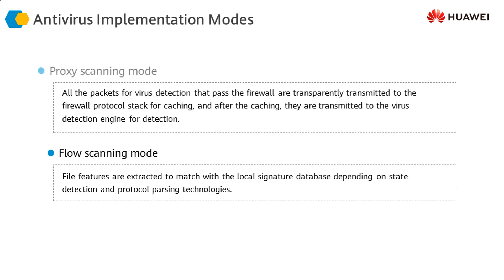This antivirus mechanism can be implemented in two modes: proxy scanning mode or flow scanning mode. In proxy scanning mode, the file is cached before antivirus detection and cleaning is performed. In flow scanning mode, caching is not done — samples are taken from the files to detect whether they contain a virus. Proxy scanning mode is more effective but puts a lot of load on the device, whereas flow scanning mode adds less load on the firewall but is not as effective. Based on load and effectiveness requirements, you can select either mode.